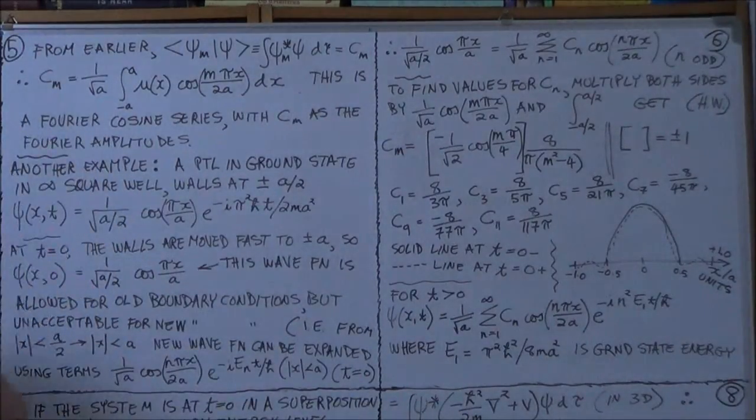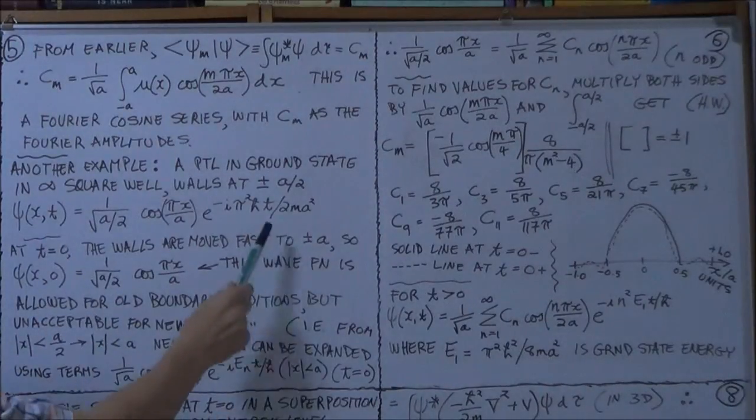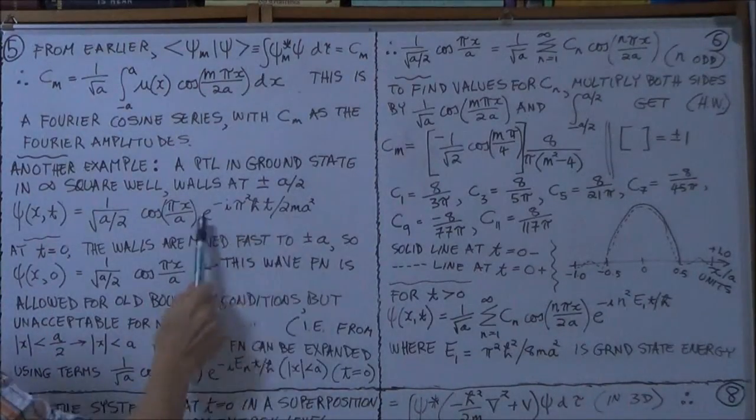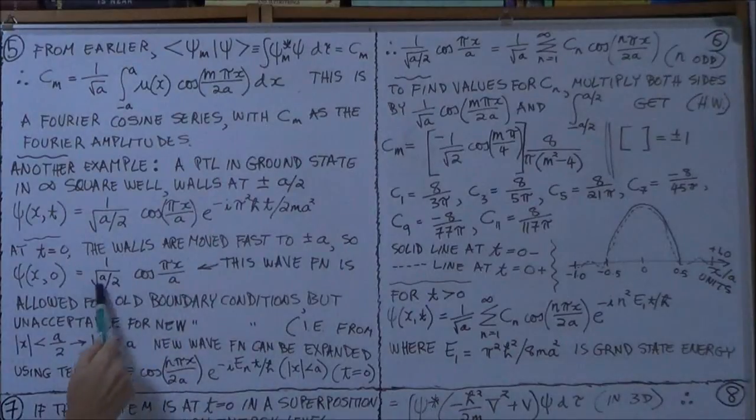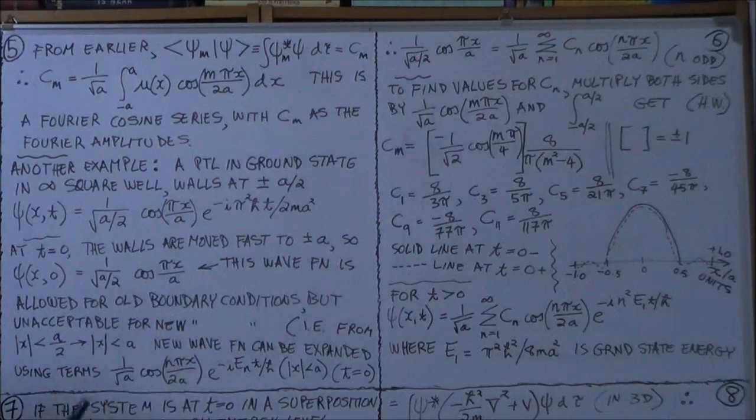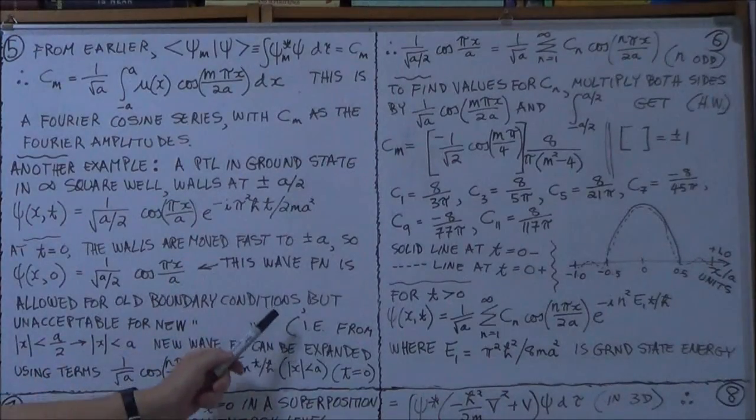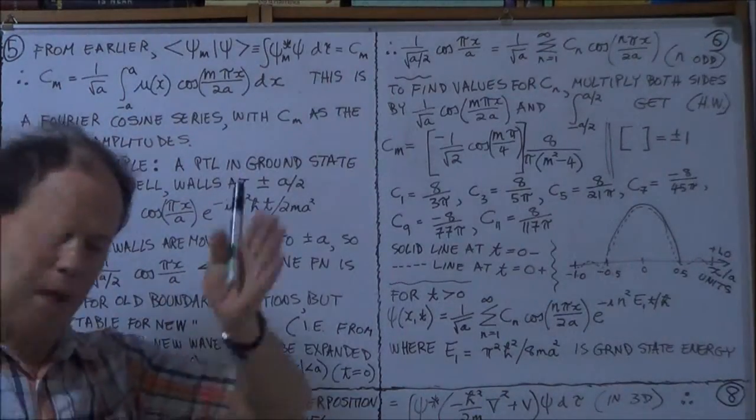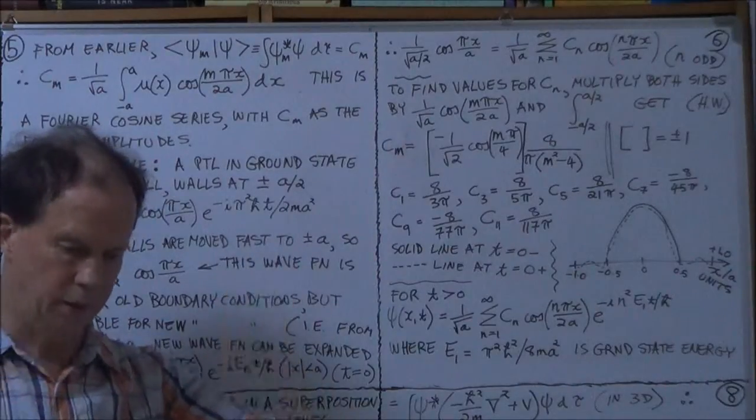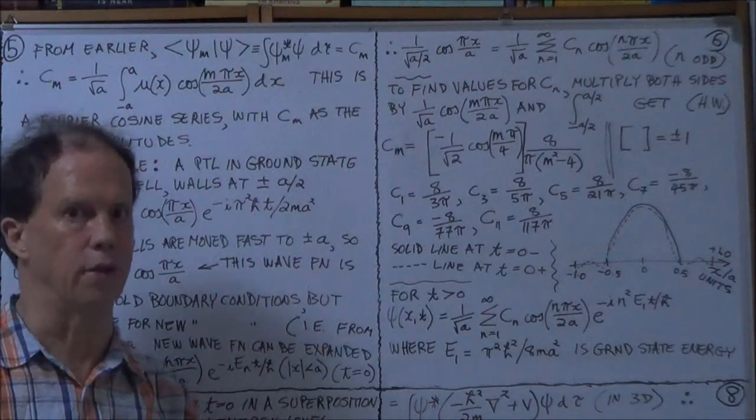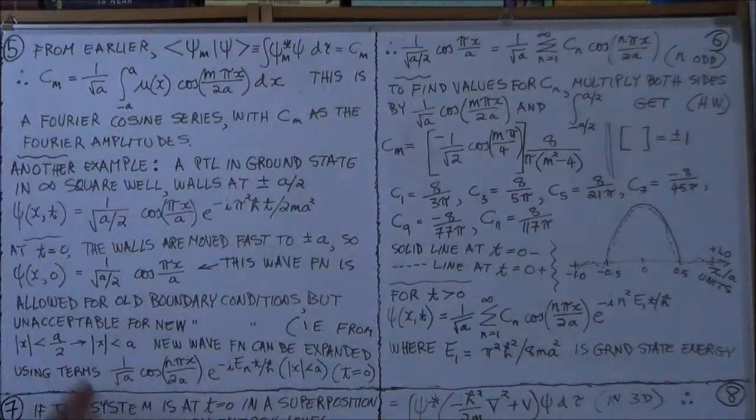So, your wave function now, when t is 0, so all this, this exponential term just drops out, and you're just left with this expression. Okay. But, but this expression was derived with the old boundary conditions, meaning the potential barrier was situated at plus or minus a over 2. But now,